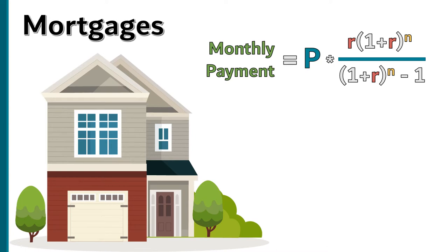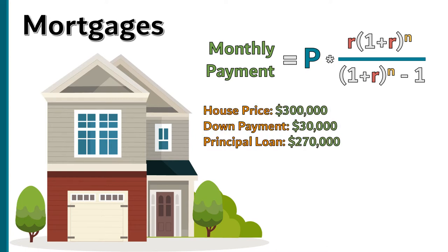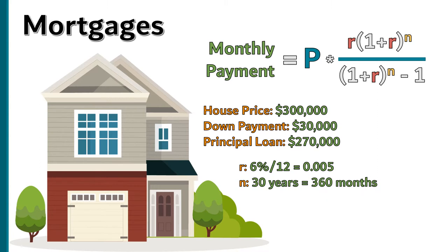Let's do an example. Let's say you buy a house for $300,000 and you put 10%, or $30,000, of your own money down. That means you need to borrow the remaining $270,000 — that will be the principal amount borrowed. If you get a 30-year fixed rate mortgage, the most common type, at a six percent interest rate, then R will be 0.005 and N will be 360 months.